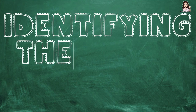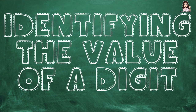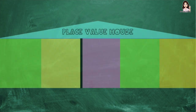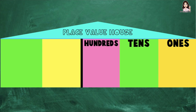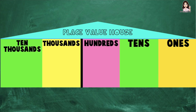Today, I'm going to teach you identifying the value of a digit. Let's have a review first. I have here the place value house. In the place value house, we have the ones place, tens place, hundreds place, thousands place, and tens thousands place.